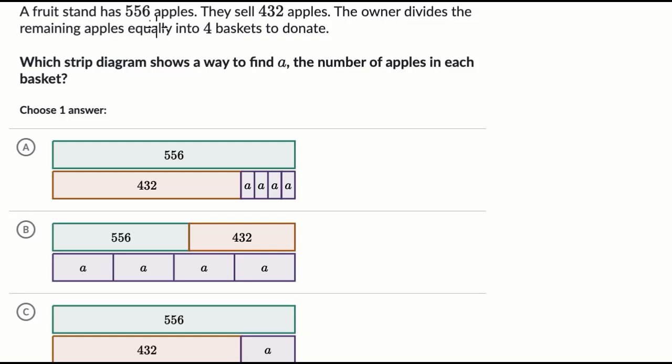A fruit stand has 556 apples. They sell 432 apples. The owner divides the remaining apples equally into four baskets to donate. Which strip diagram shows a way to find A, the number of apples in each basket?